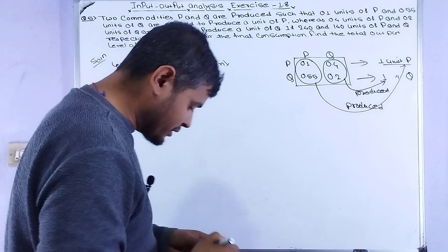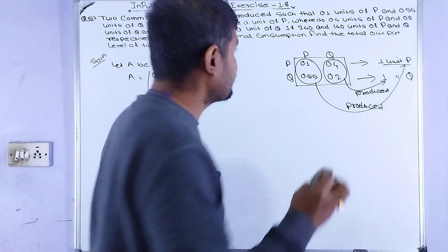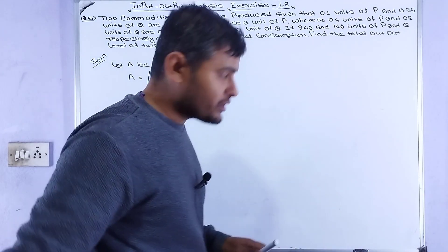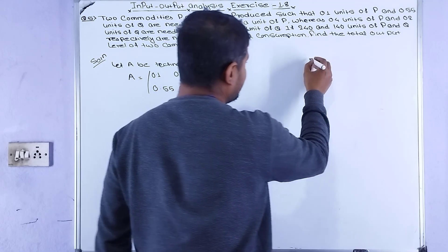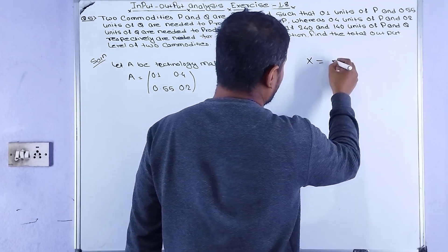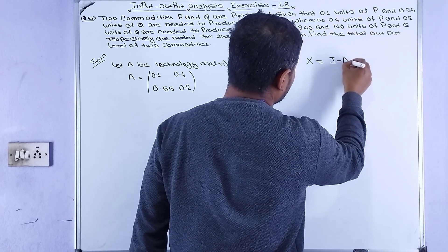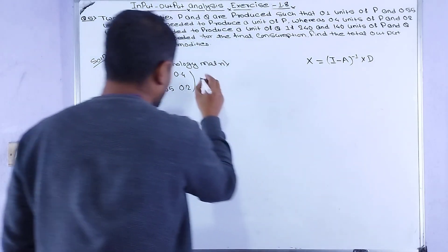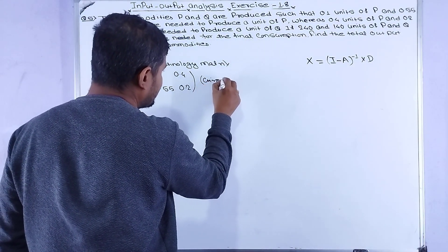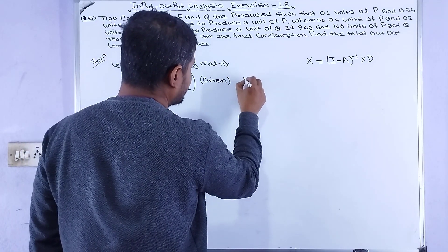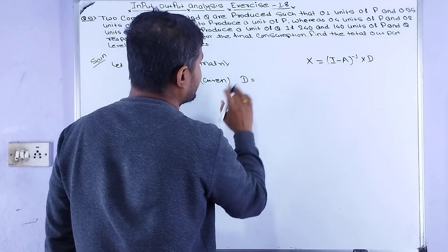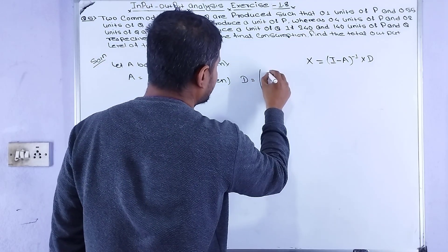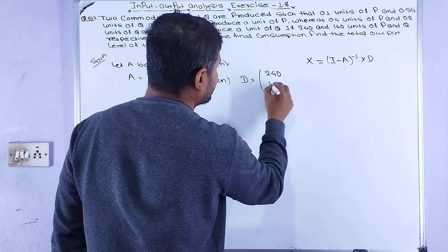To find total output, we use the formula: X = (I - A) inverse times D, where D is the final demand vector. The given values are D1 = 240 and D2 = 140.